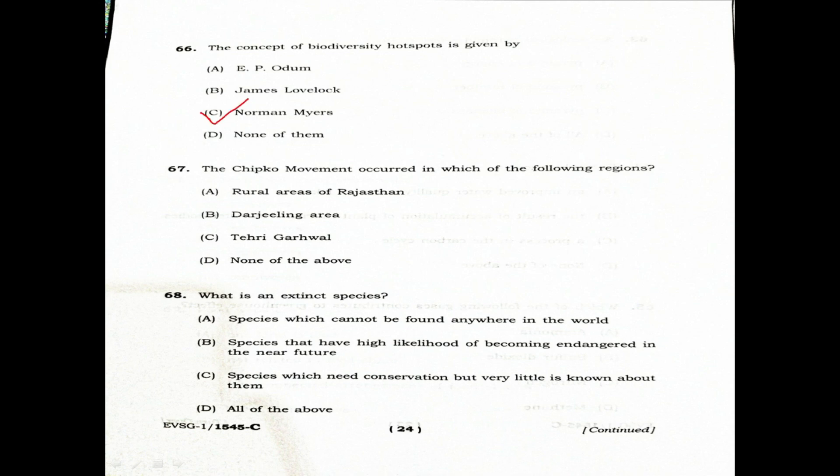Question 67: The Chipko movement occurred in which of the following region? Option A: Rural areas of Rajasthan. Option B: Darjeeling area. Option C: Tehri Garhwal. Option D: None of the above. The correct answer is C, Tehri Garhwal.